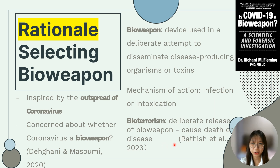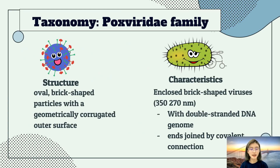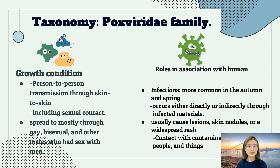That's all for my part. Thank you. Hi guys, my name is Chloe and today I would like to introduce the taxonomy of smallpox. It belongs to the family Poxviridae. Let me introduce the structure of smallpox: it consists of oval or brick-shaped particles with a geometrically corrugated outer surface. It encloses brick shapes between 240 to 300 nm and has complex internal structures including a double-stranded DNA genome with ends joined by covalent connections.